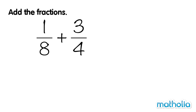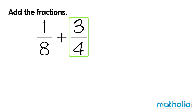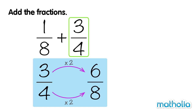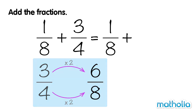Let's find 1 eighth plus 3 quarters. The denominators of these fractions are not the same. To add the fractions, we must first make the denominators the same. If we multiply the numerator and the denominator of 3 quarters by 2, we get 6 eighths. 3 quarters and 6 eighths are equivalent fractions. So we can rewrite 1 eighth plus 3 quarters as 1 eighth plus 6 eighths.